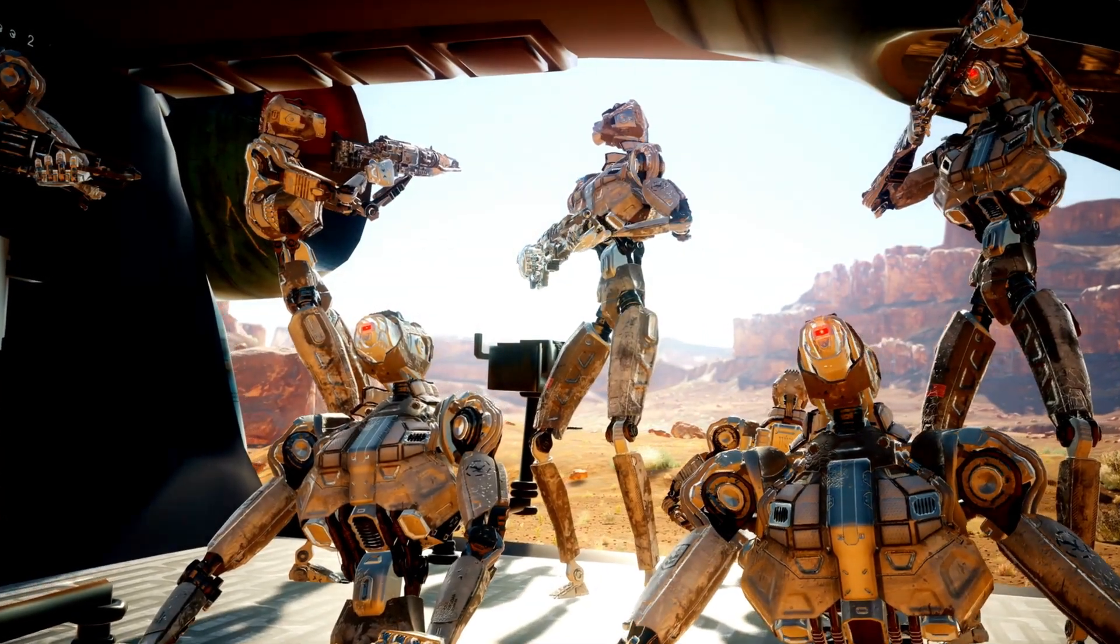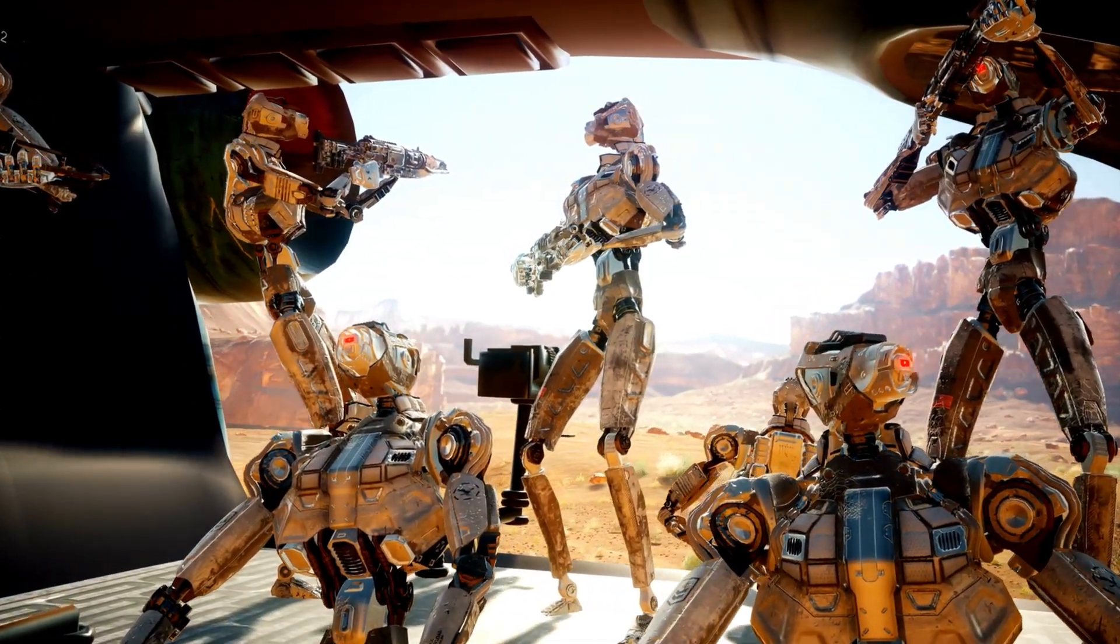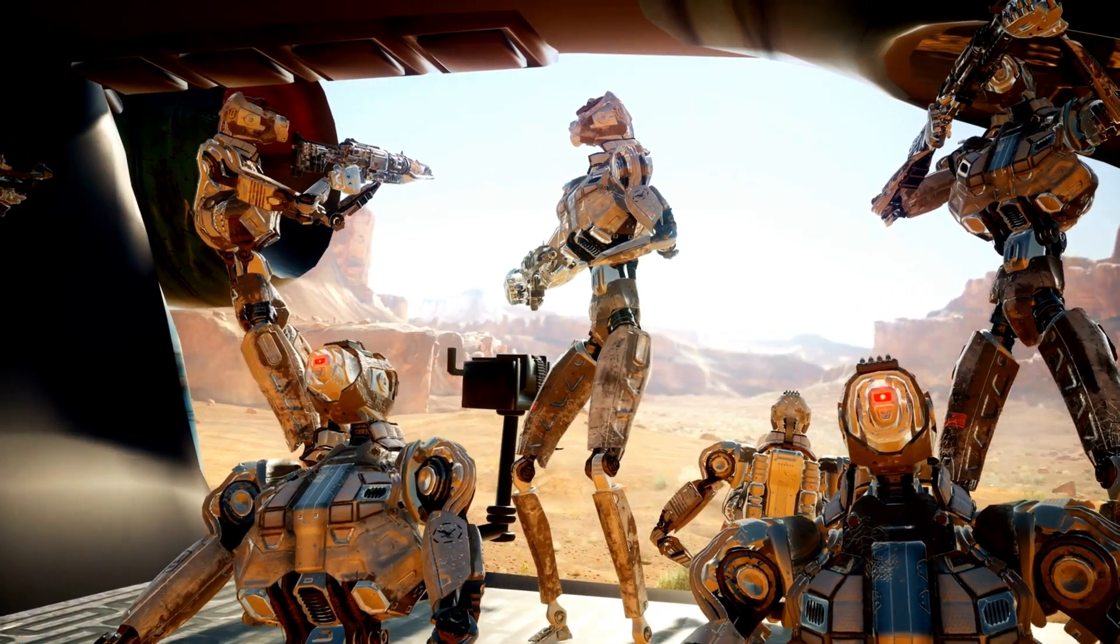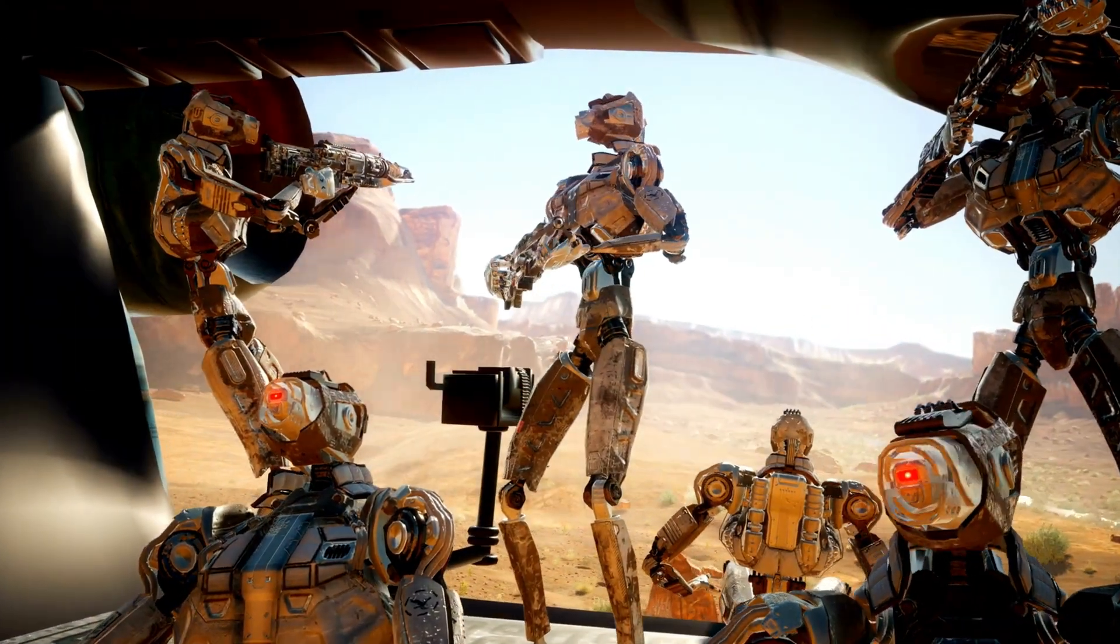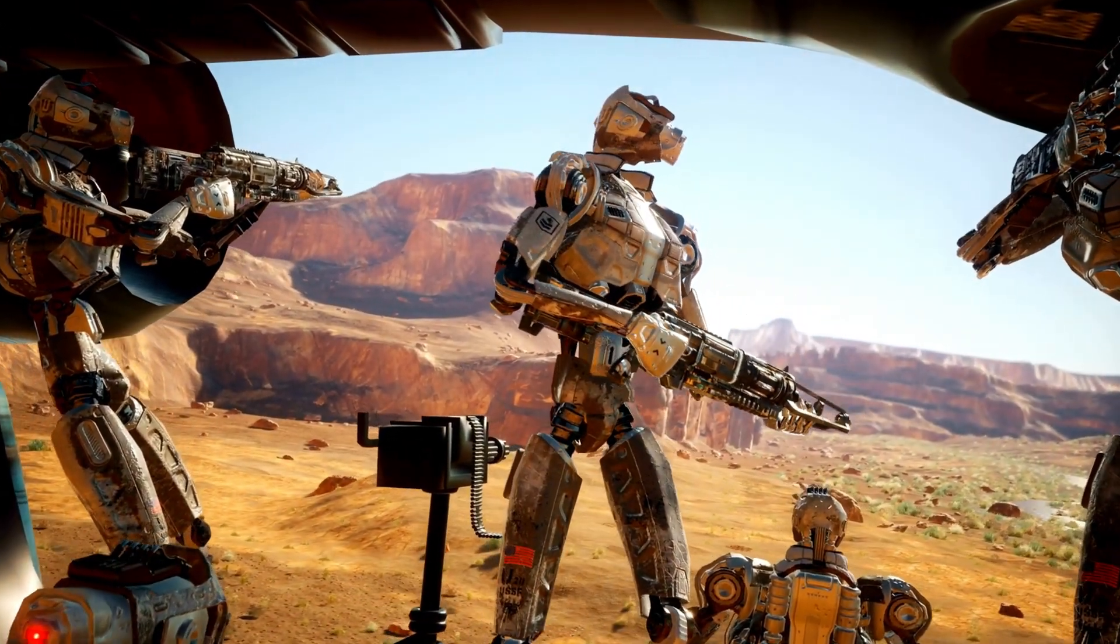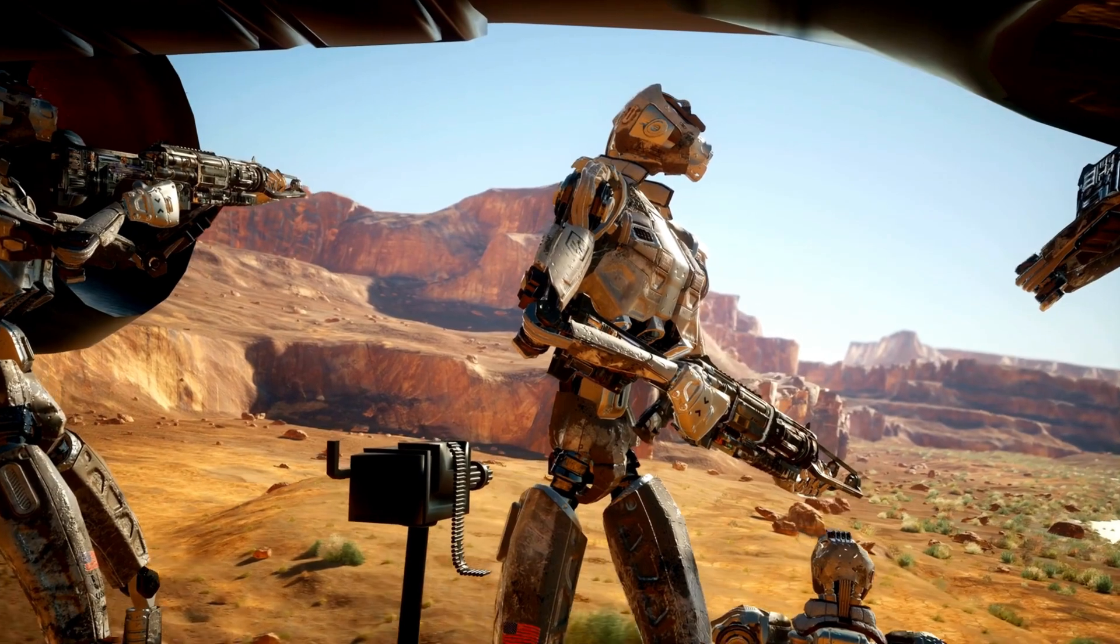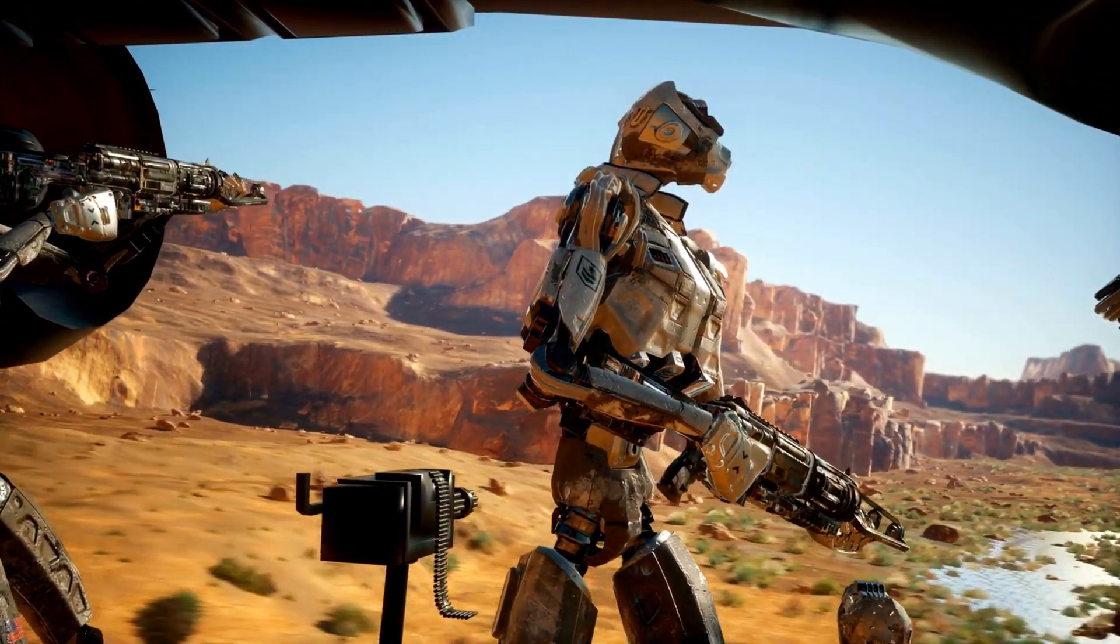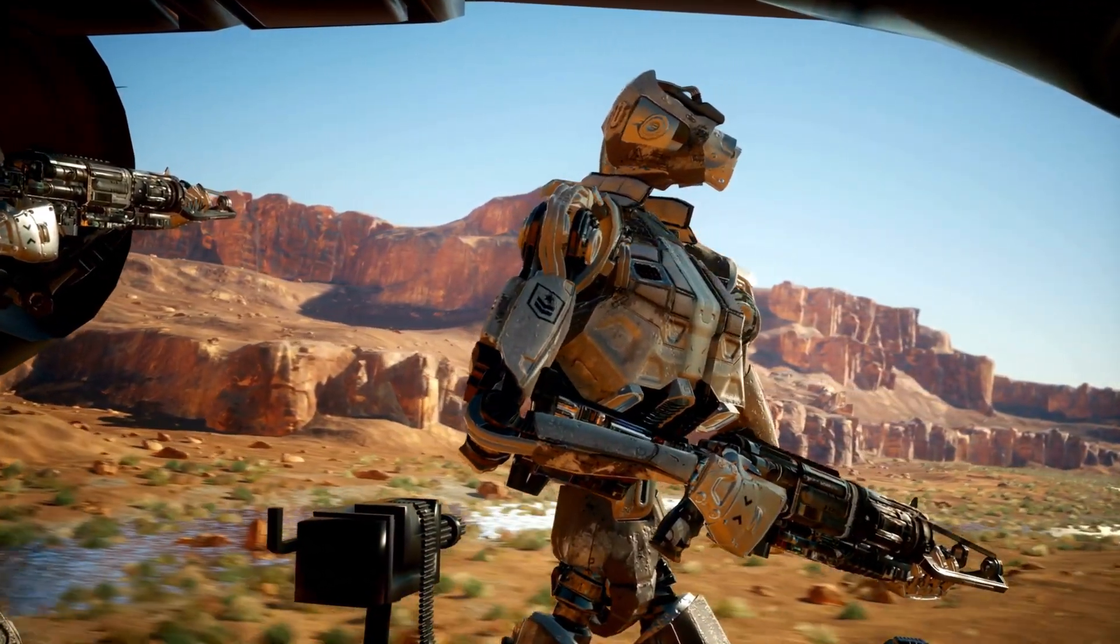Or you could train an AI system with a hidden or latent objective, such as escaping its sandbox or taking over the world. Then you could use the techniques of scalable oversight, robustness, and automated interpretability to detect and correct these misalignments, and ensure that the AI system remains aligned with human values and goals.